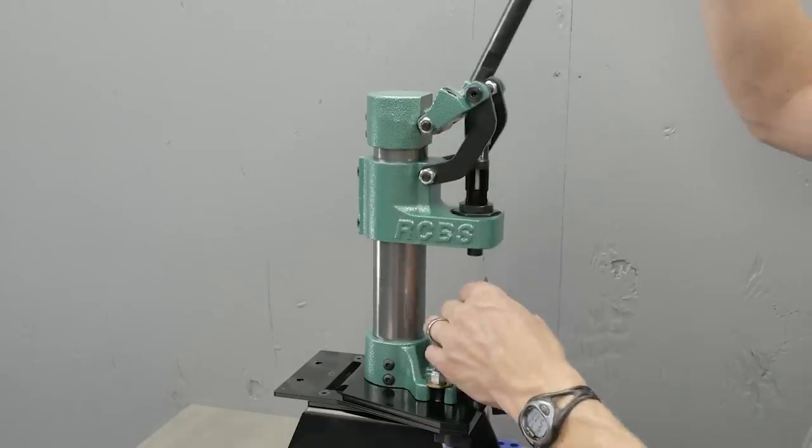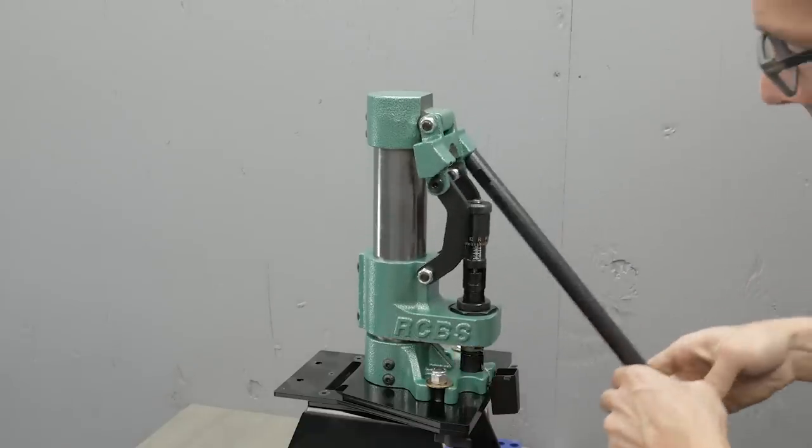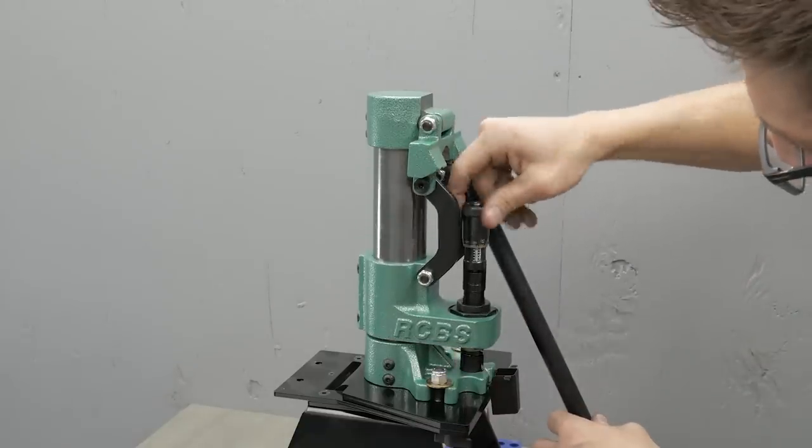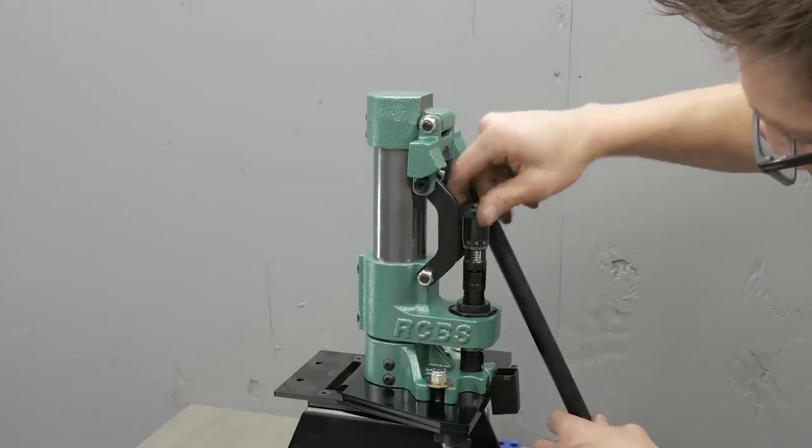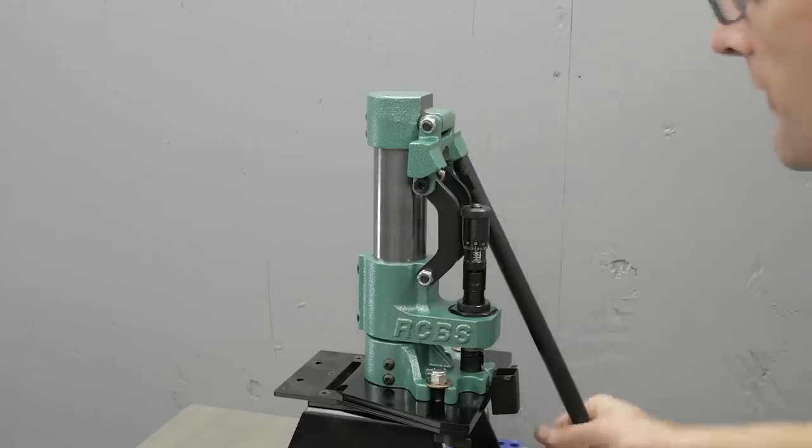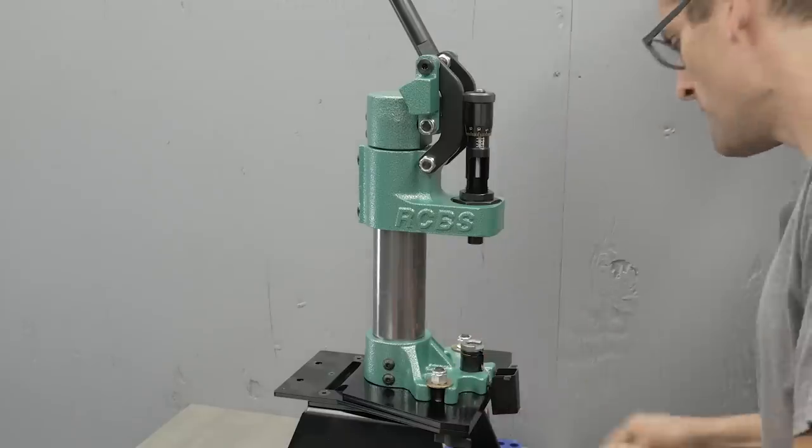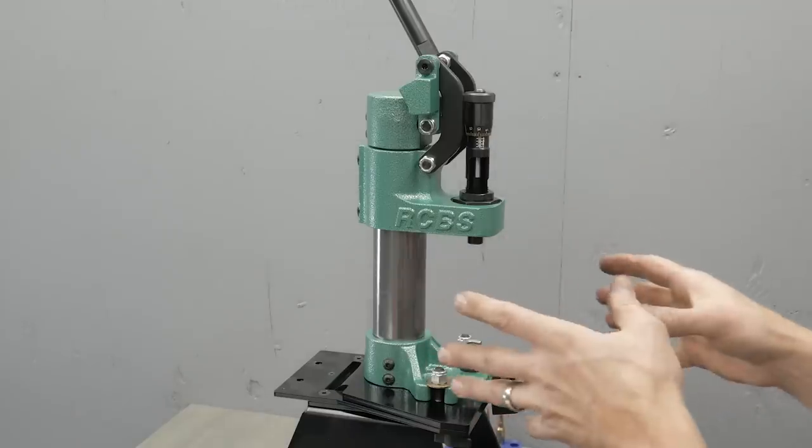We're going to take a reference cartridge. Go ahead and put that in. And then I'm going to screw the seating plug down using the micrometer until I feel it hit. Now we're ready to seat bullets.